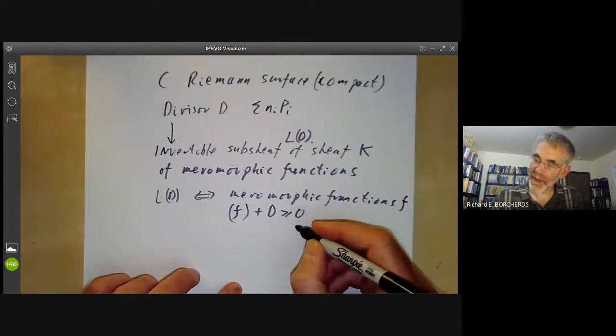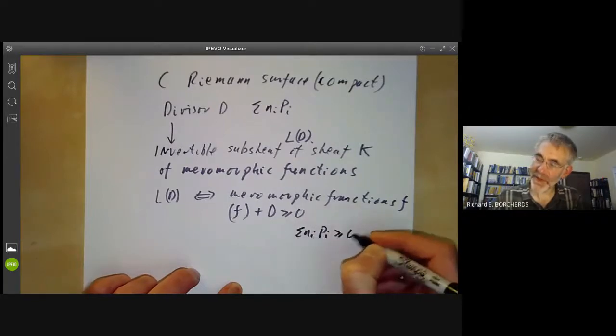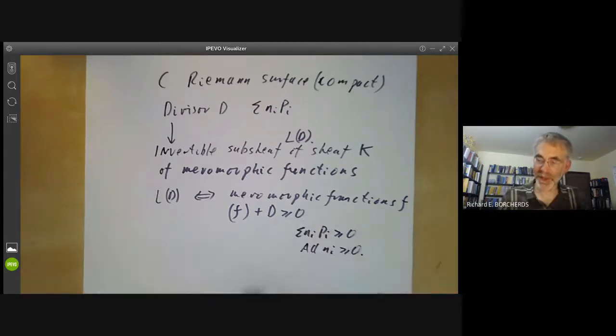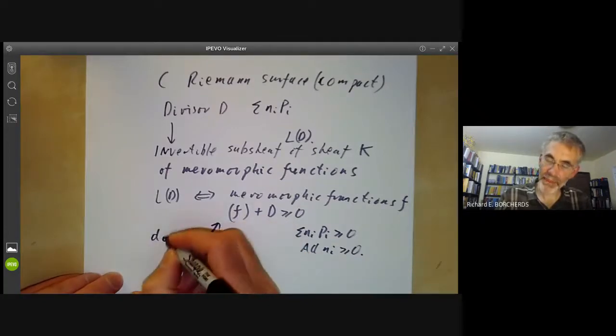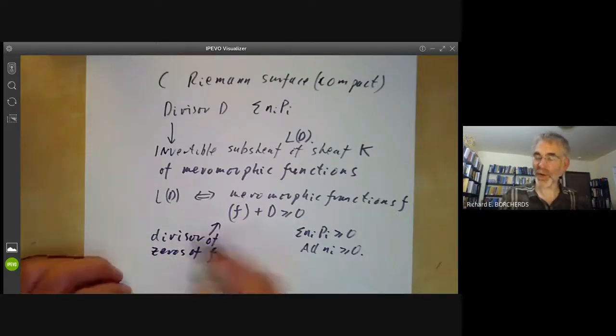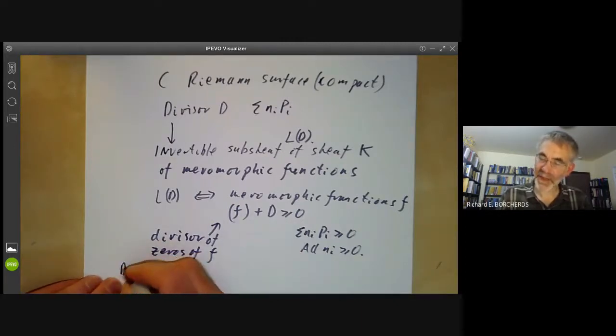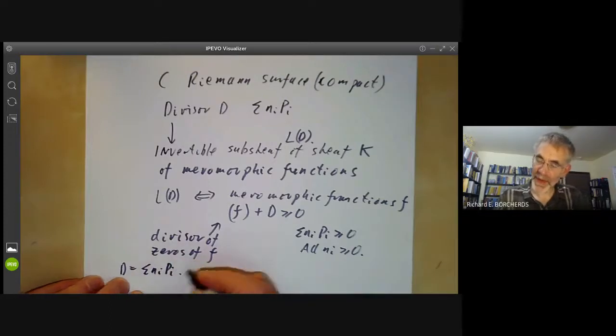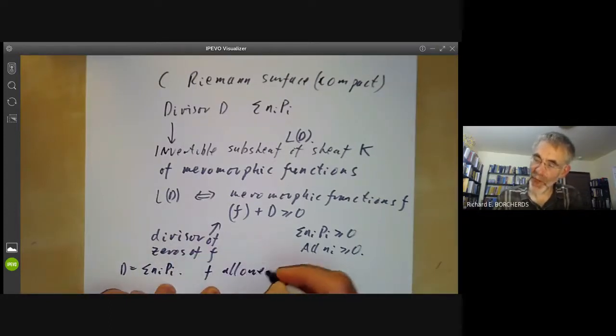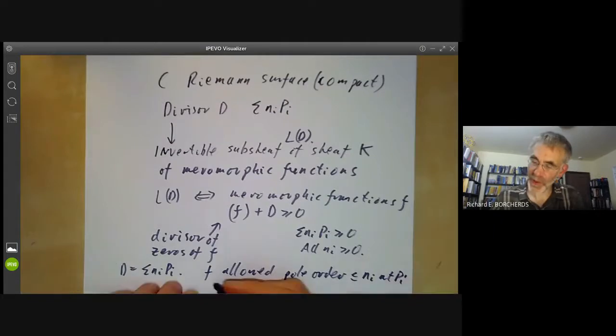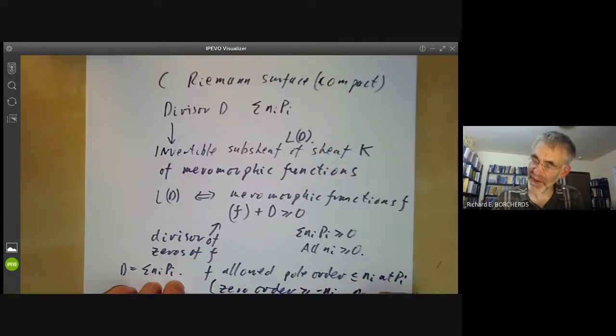If we have a divisor sum of N_i P_i greater than or equal to zero, this means all N_i are nonnegative. These are the positive divisors. F is the divisor of zeros of F, where poles count as negative zeros. So if D is sum of N_i P_i, then F is allowed a pole of order at most N_i at P_i, or a zero of order at least minus N_i if N_i is negative.